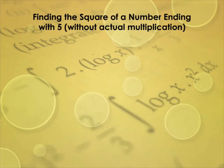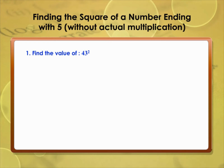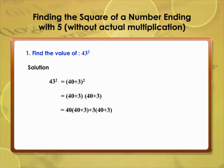Finding the square of a number without actual multiplication: find the value of 43². Solution: 43² = (40 + 3)² = (40 + 3)(40 + 3) = 40×40 + 40×3 + 3×40 + 3×3 = 1600 + 120 + 120 + 9 = 1849.